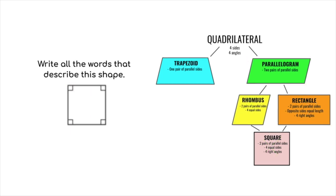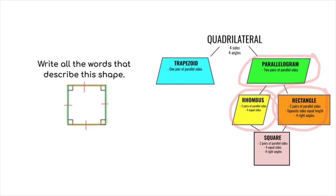Let's try another. We see this side is parallel to this side, and this side is parallel to that side — we have a parallelogram. Moving down: does it have four equal sides? One, two, three, four — yes, so it is also a rhombus. Does it have four right angles? Yes, so it is a rectangle as well. It has four right angles, all four sides equal, and two pairs of parallel sides — so it is also a square. This shape is a parallelogram, a rhombus, a rectangle, and a square.